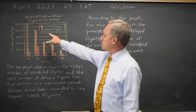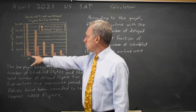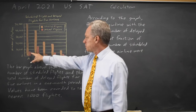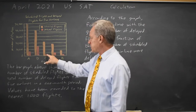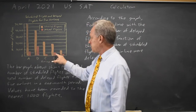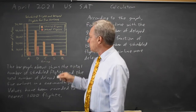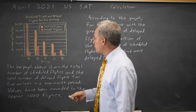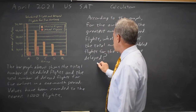Delayed flights are pink, and the greatest number would be Airline B, which is substantially greater than A, C, D, or E. And that is 15,000 delayed.